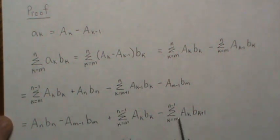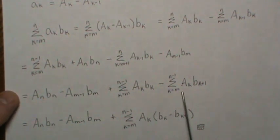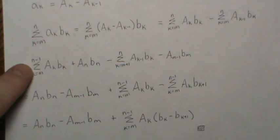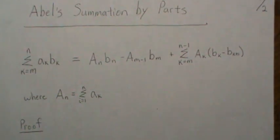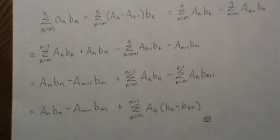Since we're summing the same, we can combine them, and that's what we do here. And then when we combine them, I factor out capital A_k and then we have this difference here. So that's what we set out to prove, is that this equals that.